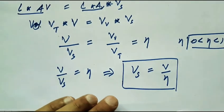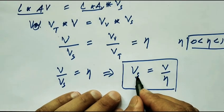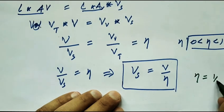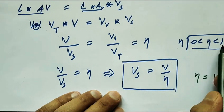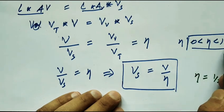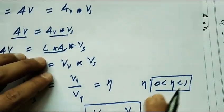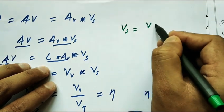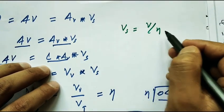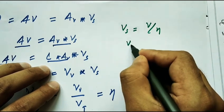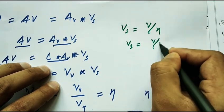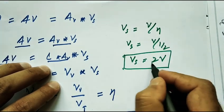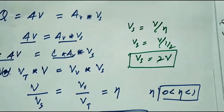We can prove that seepage velocity is greater than discharge velocity. Suppose n equals 1/2, since porosity is greater than 0 and less than 1. Then Vs equals V divided by 1/2, which gives Vs equal to 2 times V. So seepage velocity is 2 times the discharge velocity.